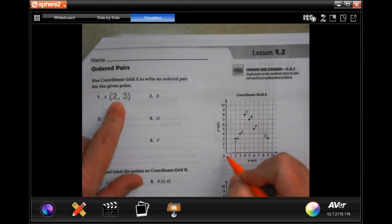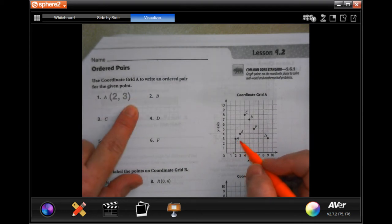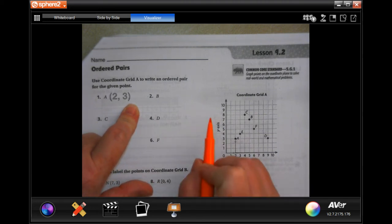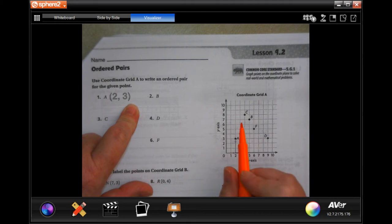For A, it says they went over two and up three. X-axis, Y-axis. So you're going to do the X-axis and then the Y-axis. If you can't remember that, I like to say over and up and they're in alphabetical order. O comes before U. So over first, then up. How many over, then how many up?